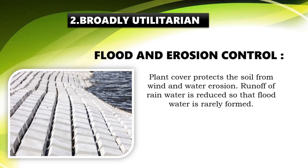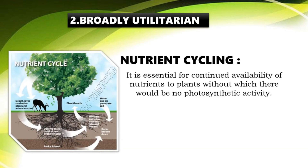Plants absorb water into the soil, so floodwater forms slowly and runoff is reduced. Nutrient cycling is essential for continued availability of nutrients to plants, without which there would be no photosynthetic activity. Nutrients in the soil support photosynthesis and the production of oxygen.